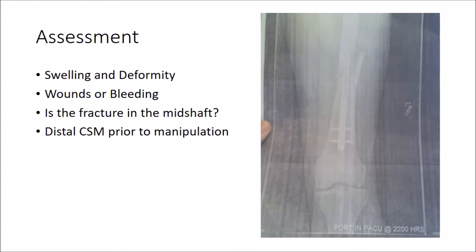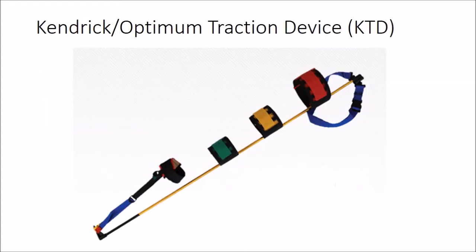Assess and document the distal CSMs prior to traction. At the skiway we use the KTD — the Kendrick Traction Device — or now the Optimum Traction Device, as they've changed manufacturers. This device has several advantages: it's effective, it can be stored in a compact package, it's almost infinitely adjustable for patients of various sizes and ages, there's no need to manipulate the leg during application until you're ready to apply mechanical traction, and at about a hundred dollars each it's less expensive than most other devices on the market.